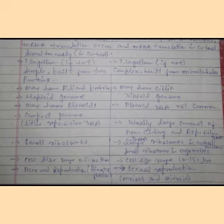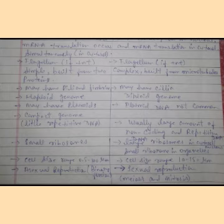Prokaryotes have a compact genome with little repetitive DNA. Eukaryotes have large amounts of non-coding and repetitive DNA — that is, complex and repetitive DNA compared to the compact prokaryotic genome.